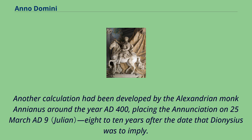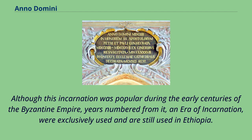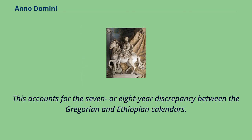Another calculation had been developed by the Alexandrian monk Annianus around the year AD 400, placing the Annunciation on the 25th of March AD 9, 8 to 10 years after the date that Dionysius was to imply. Although this incarnation dating was popular during the early centuries of the Byzantine Empire, years numbered from it — an era of incarnation — were exclusively used and are still used in Ethiopia. This accounts for the seven- or eight-year discrepancy between the Gregorian and Ethiopian calendars.